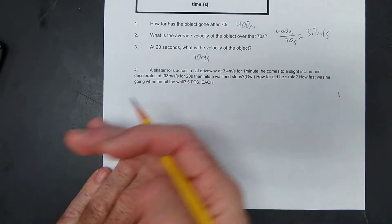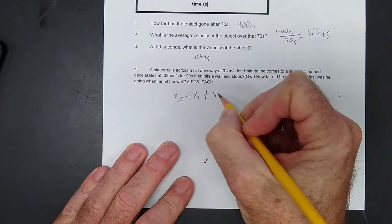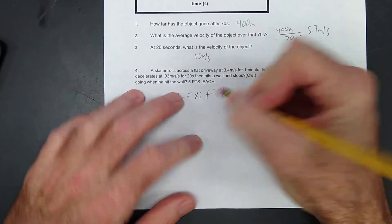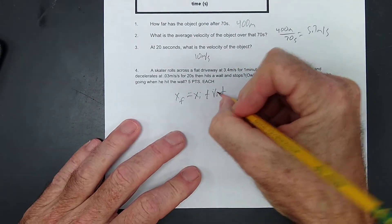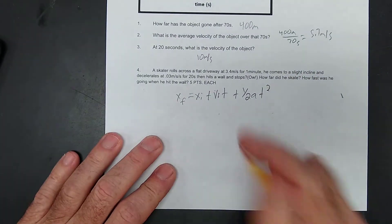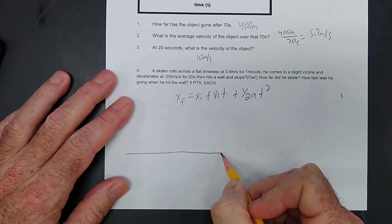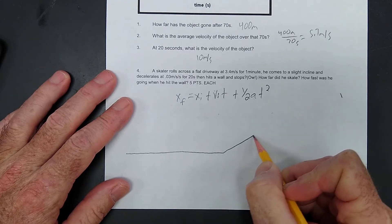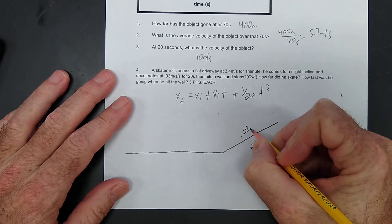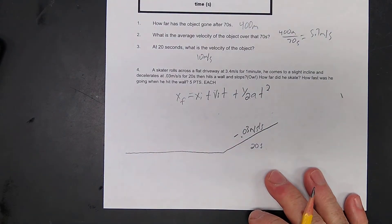Skater rolls. Now, this is going to be our long form. We usually use the short part of this formula. But, excuse me, that's not an average velocity, it's VIT. But in this one, we're going to use the long formula. So, in this problem, skater rolls across a flat driveway, 3.4 meters per second for one minute. Then he comes to an incline, and he's going to be slowing down for 20 seconds. His deceleration is 0.03 meters per second per second, so that's going to be negative because he's slowing down.